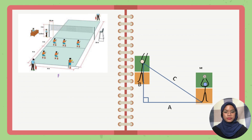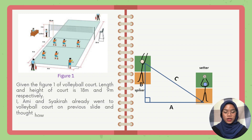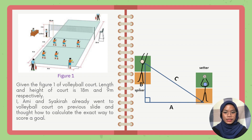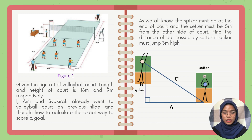Given the figure 1 of a volleyball court, the length and width of the court are 10m and 9m respectively. Amir and Shakira already went to the volleyball court and worked out how to calculate the exact way to score a goal. As we all know, the spike must be at the end of the court and the setter must be 5m from the other side of the court. Find the distance of the ball toss by the setter if the spike must jump 3m.